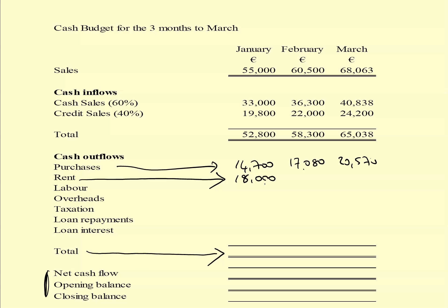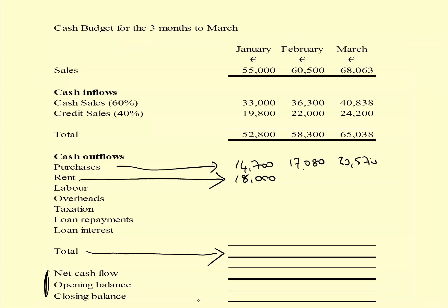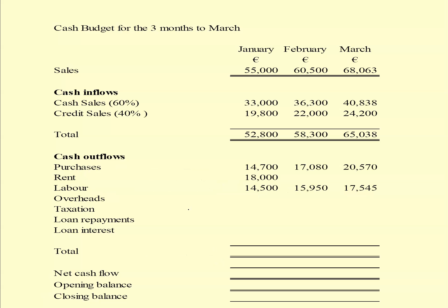For labour costs, going back to the question, note number five tells us labour costs are paid in full by the end of each month. So I write them in directly: 14,500 for January, 15,950 for February and 17,545 for March.